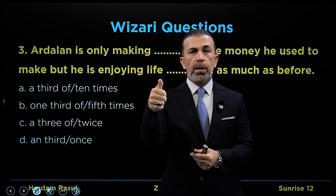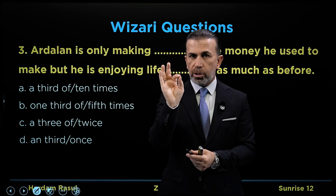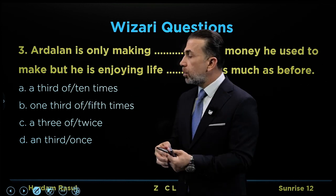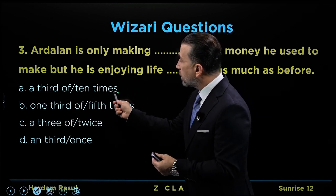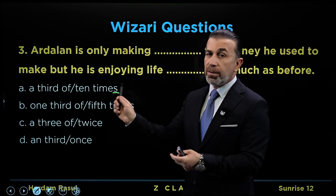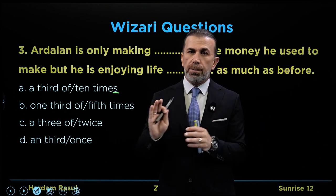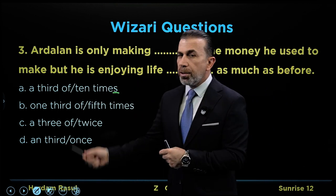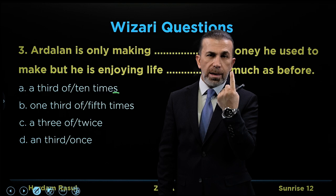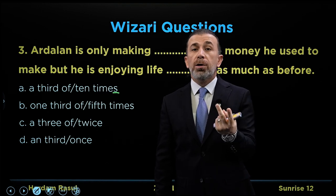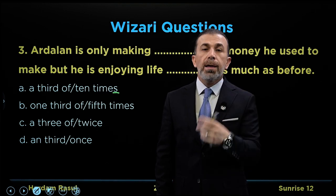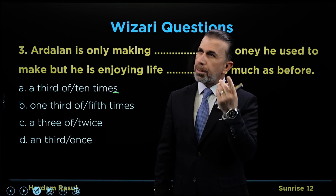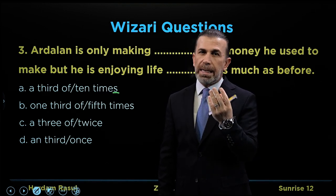Ten times, ten times — that is correct. The ordinal numbers — listen carefully: 'times' comes here. One third of — a third means one third. One third — understand that clearly.